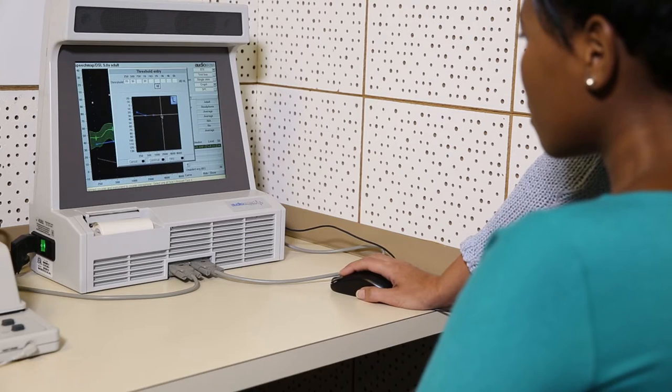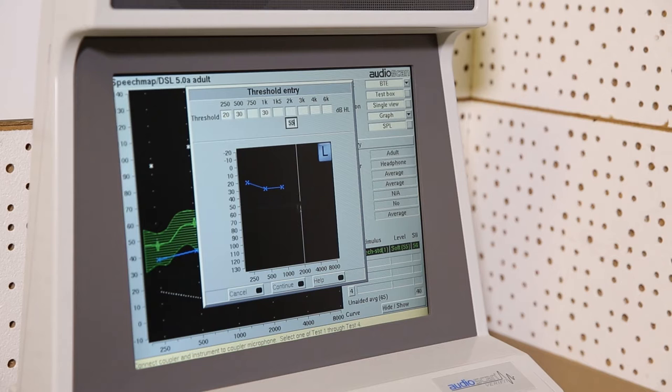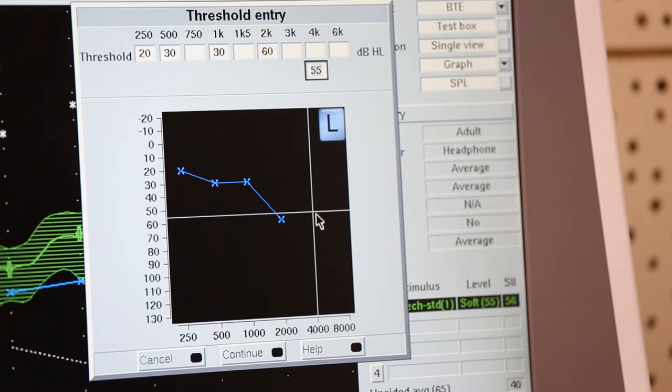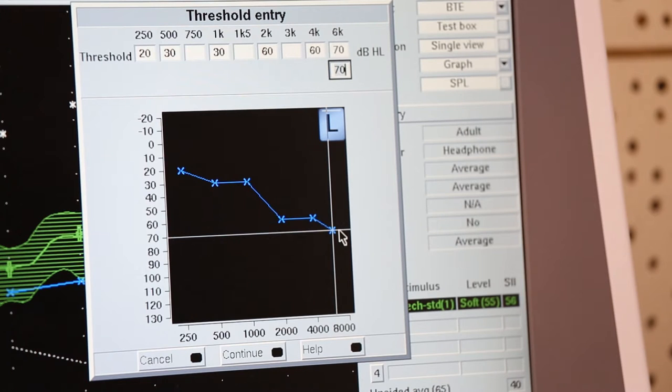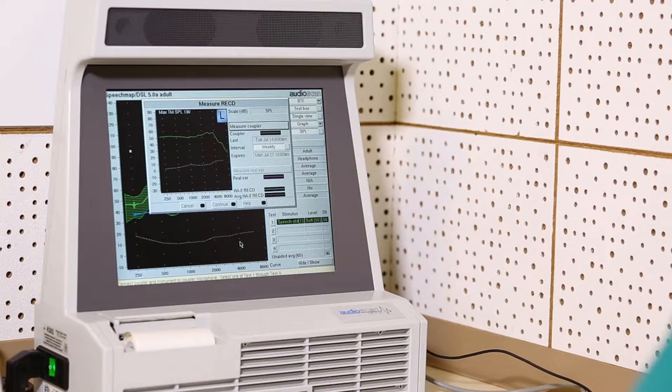The first step is to simply put in your hearing thresholds. You then press continue. And then we need to complete our RECD test that will create a target based on the real ear resonance characteristics instead of those of a 2cc coupler.